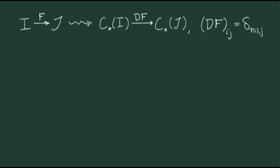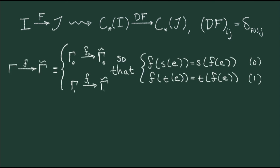Recall that I can linearize, also known as one-hot-encode, any map of sets. This gives a matrix whose (i,j)-th entry is 1 if the map sends i to j, and 0 otherwise. I'd like to do a similar maneuver, but with a map of directed graphs. First, I should remind you what a map of directed graphs is.